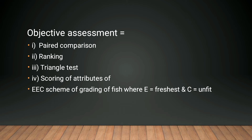There is the EEC scheme, which is a kind of grading. E means the freshest — it is the fresh form of fish — and C means unfit. Similarly, there was the EU scheme, that is the European Union scheme. But it was not a very useful method because we cannot compare it between different species. There will be given statements for comparison but it is not species-specific, so this method did not come out with a proper outcome.